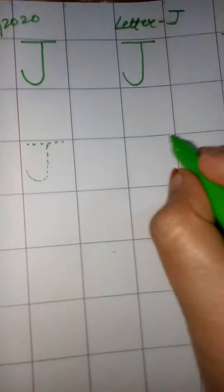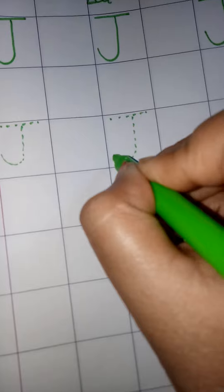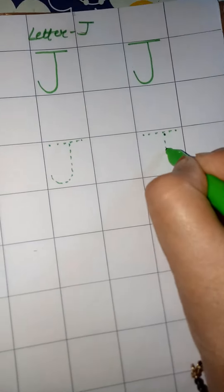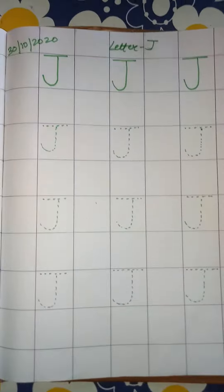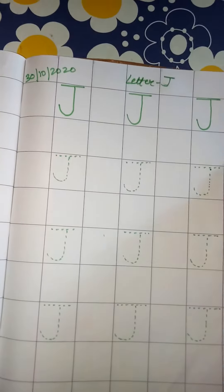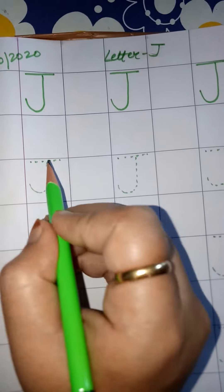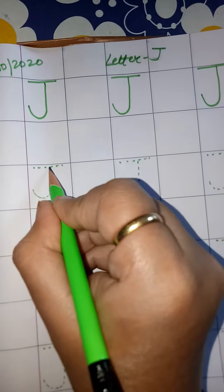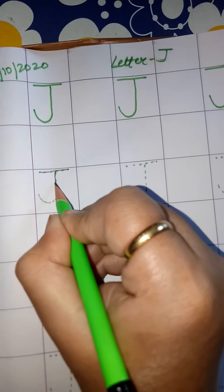Children, now you will trace on these dots with the pencil. First you will make a sleeping line, and then you will make a standing line, and then curve. So this becomes letter J, J for joker.